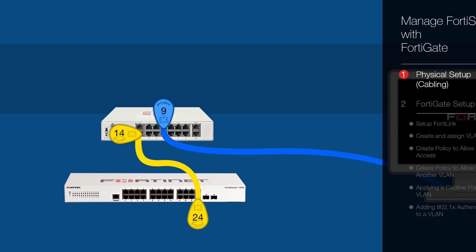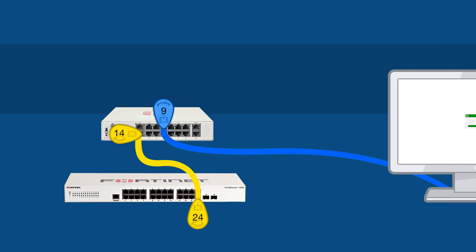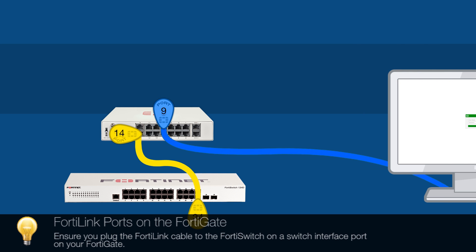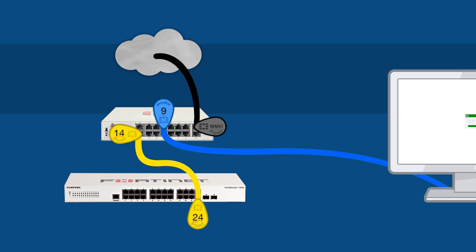Here's how we've cabled this network. We will link the FortiGate and FortiSwitch by using port 24 on the FortiSwitch to any switch interface port on the FortiGate — in this case we will use port 14. With newer model FortiSwitches, look for a label indicating which ports are used for FortiLink auto-configuration, or refer to the documentation for your unit. We will manage the FortiGate from port 9, and the FortiGate will use WAN1 for internet access.